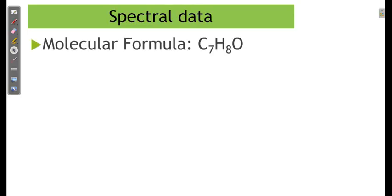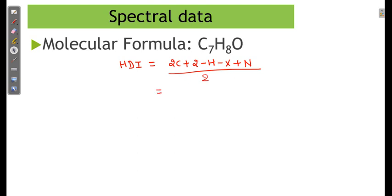A molecular formula is given to us. Based on this molecular formula, we have to find the HDI, that is the Hydrogen Deficiency Index. The equation is: (2C + 2 - H - X + N) / 2. Based on this formula: 2 × 7 = 14, plus 2 minus 8, X is not present. That gives 8 / 2 = 4. So the HDI value is 4.